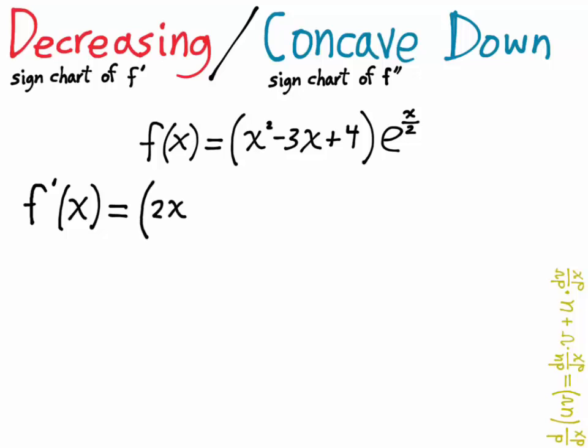So I'm going to write that out first, du dx, the derivative of the polynomial, times v, the exponential, plus u, the polynomial, times the derivative of v, and that's 1 half times e to the x over 2 from the chain rule factor.